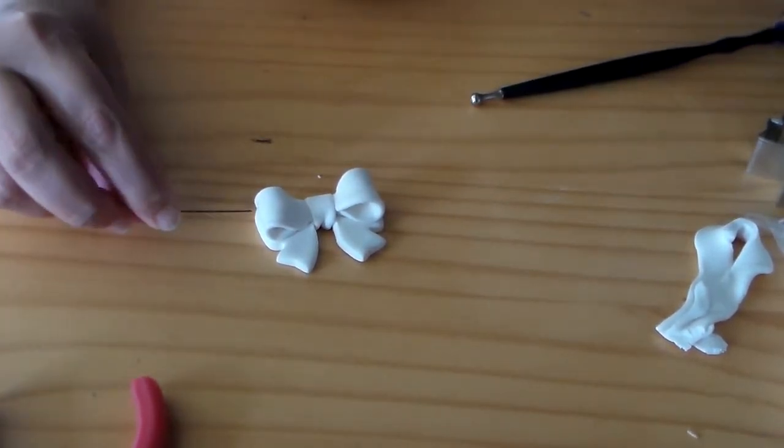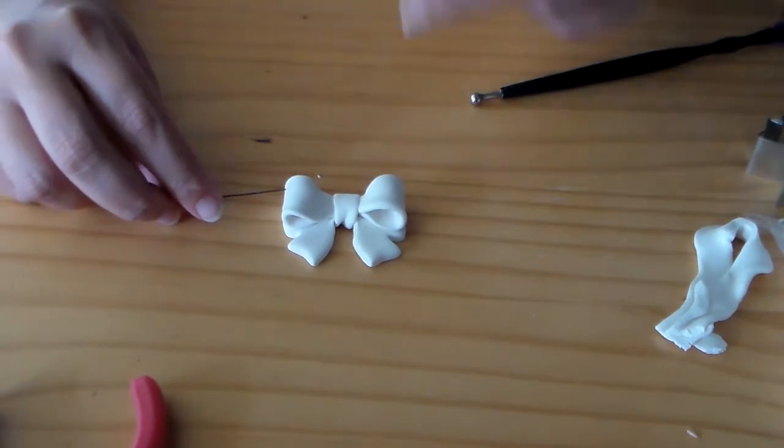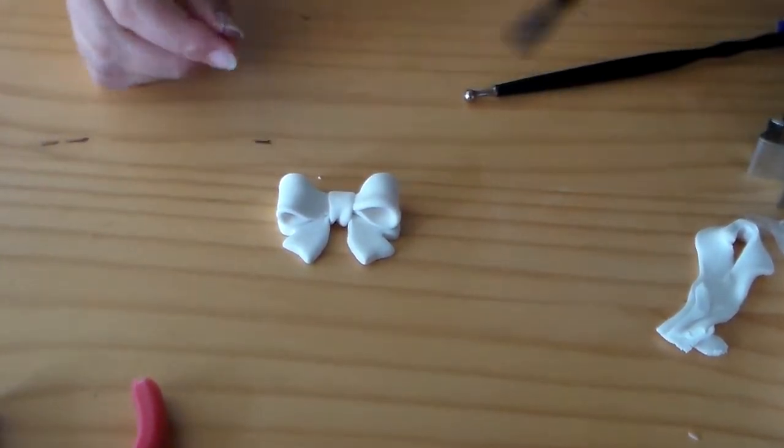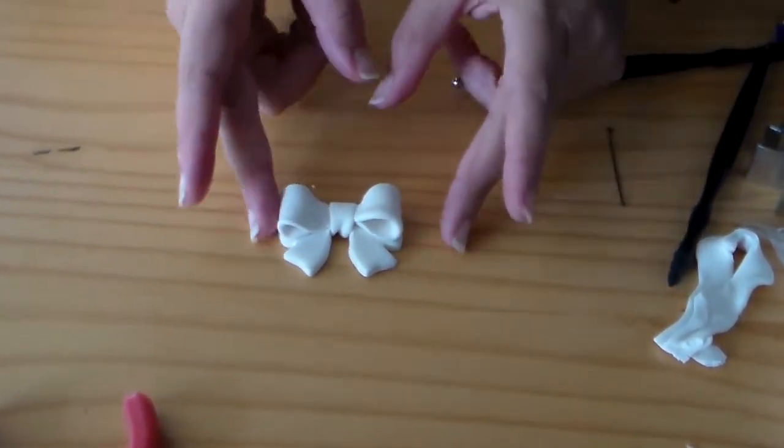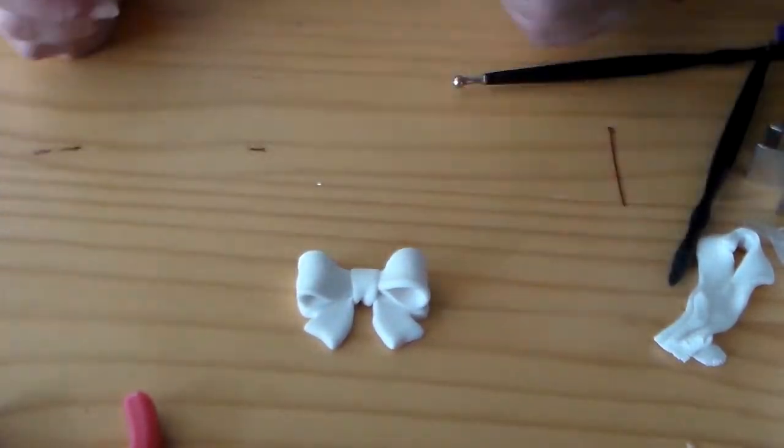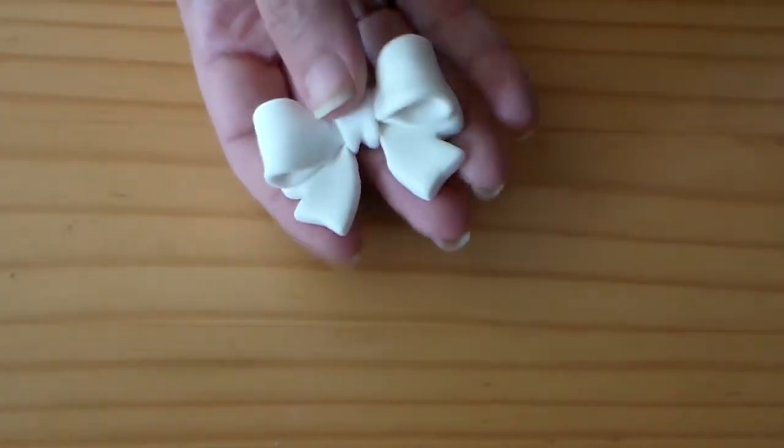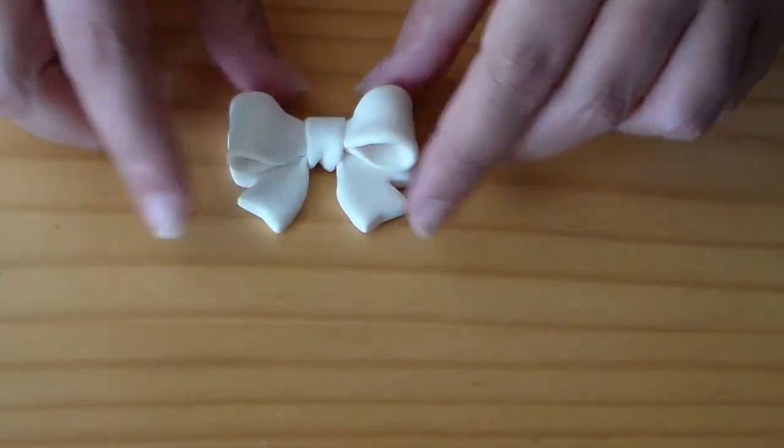You want to use a head pin to poke holes kind of towards the top so that the chain hangs evenly. Poke holes through both sides and then cure to the specifications on the back of the package of the clay that you use.